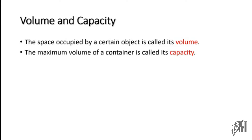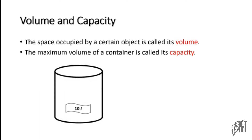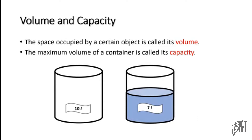Let me explain this using a diagram. This is a cylinder of capacity 10 liters, meaning the maximum amount of liquid that can be filled into this cylinder is 10 liters. Now look at this cylinder — it's halfway filled and the amount of water in the cylinder is 7 liters. So in this case, the volume of water in the cylinder is 7 liters. The capacity of the cylinder is 10 liters but the volume of water at the moment is 7 liters.